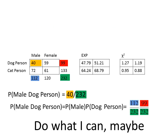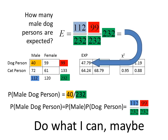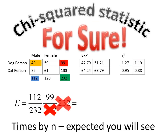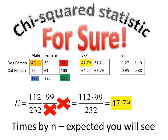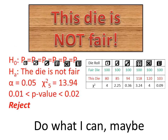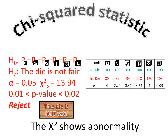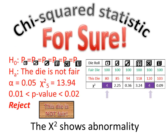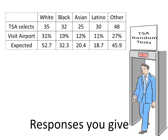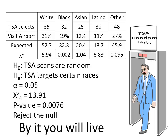Do what I can, maybe, kind of squared statistic — for sure, come by then. Expect it, you'll see. Those kind of squares show abnormality. Qualitative responses give this method — by it, you will live.